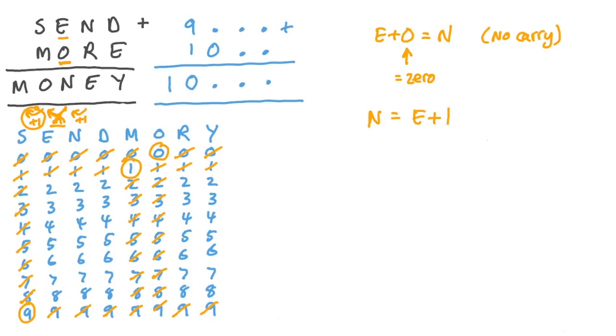Now, looking at our grid, if n is 1 bigger than e, then n clearly can't be 2, and e can't be 8. Now, because we need to have carry from the tens into the hundreds column, we know that n plus r, possibly plus 1, if there's carry from the ones column, must be greater than 9. In fact, we can be a little bit more specific than that, because we know that the ones digit in the answer to n plus r, possibly plus 1, is e, we can write n plus r, possibly plus 1, is equal to 10 plus e.